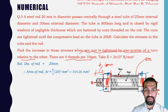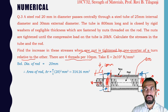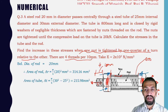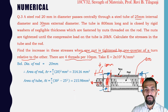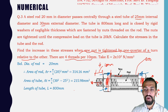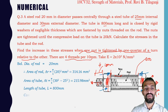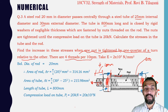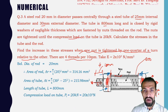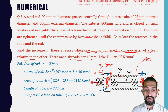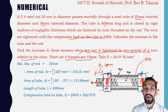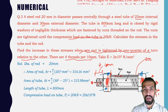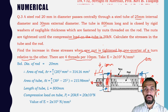Area of rod: AR = π/4 × 20² = 314.16 mm². Area of tube: AT = π/4 × (30² − 25²) = 215.98 mm². Length of tube = 800 mm. Compressive load on tube PT = 20 kN = 20,000 Newton. E = 2 × 10⁵ N/mm².